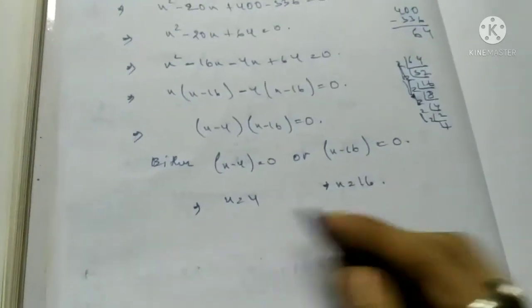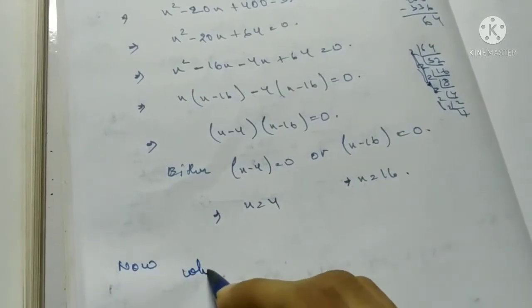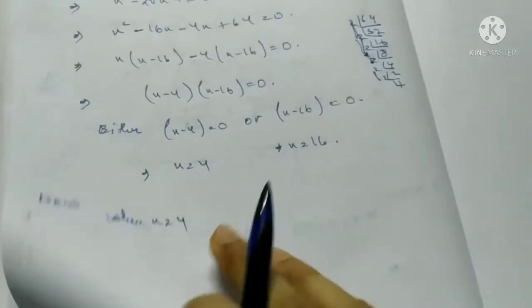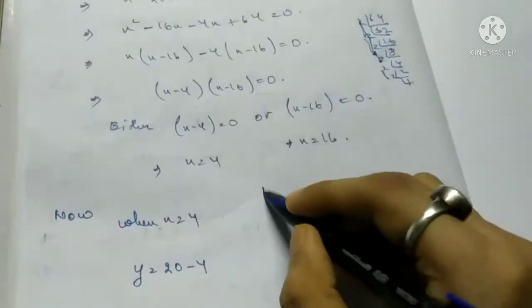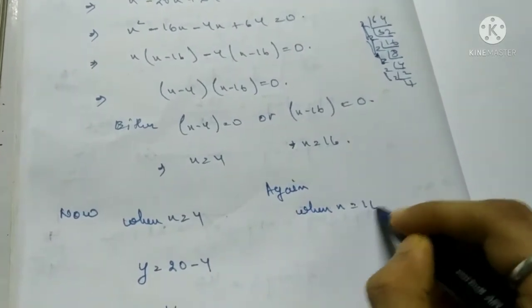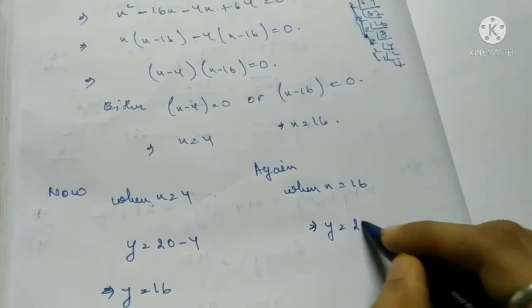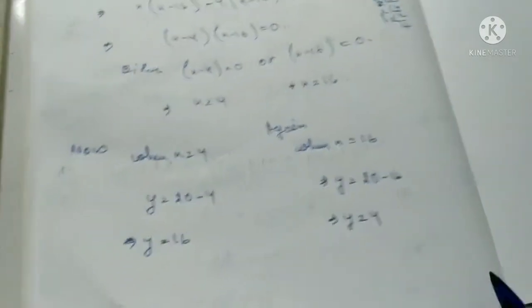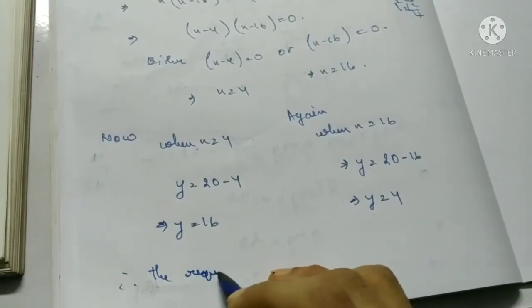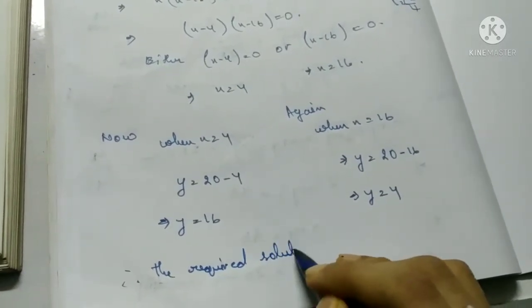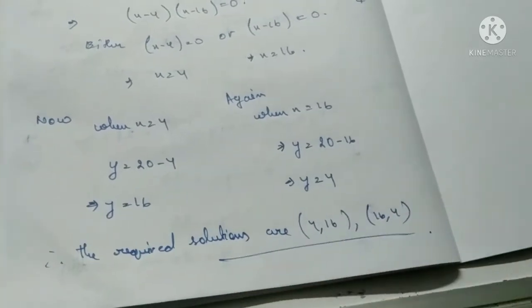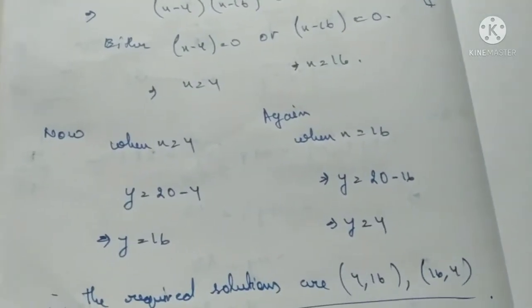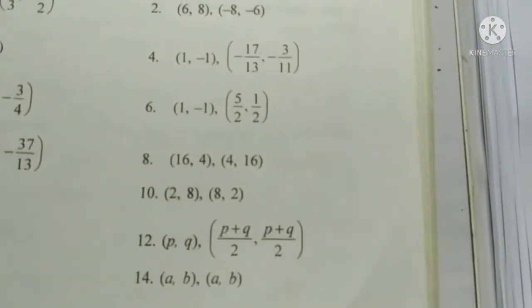When x equals 4, y equals 20 minus 4 equals 16. When x equals 16, y equals 20 minus 16 equals 4. Therefore the required solutions are (4, 16) and (16, 4). Checking the back answer: 4, 16 and 16, 4 — correct.